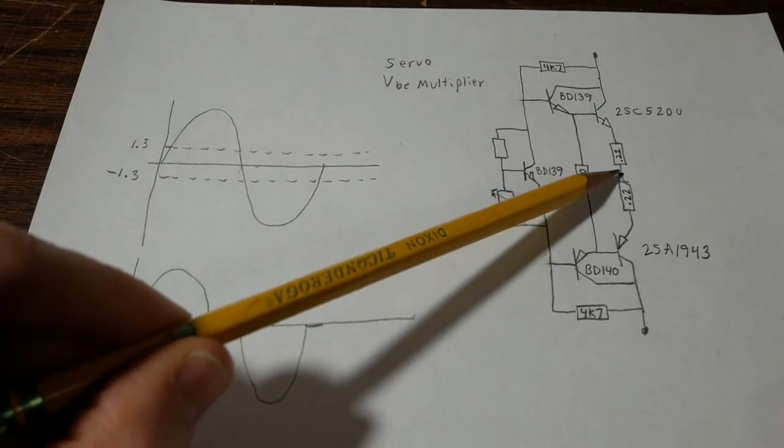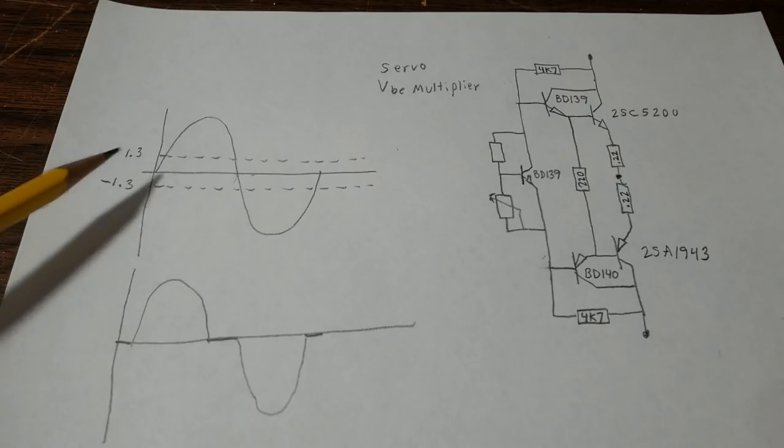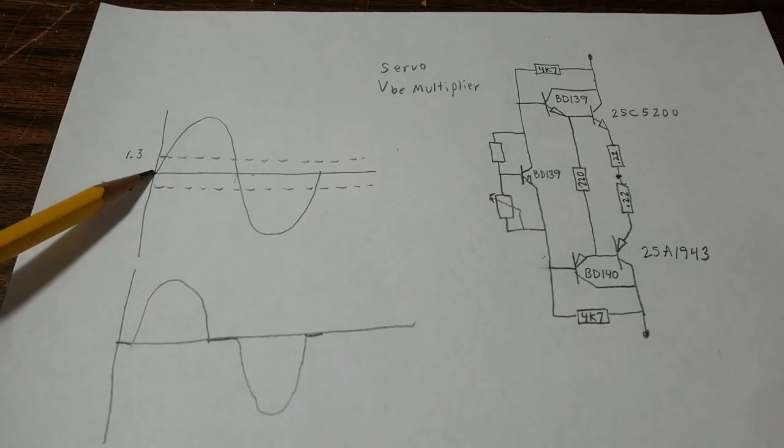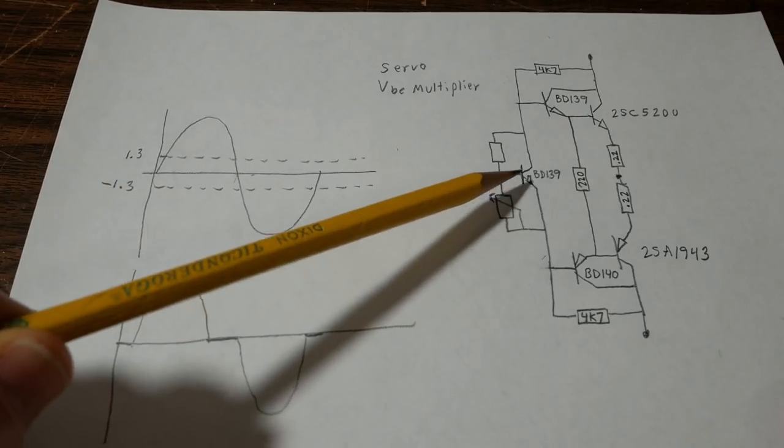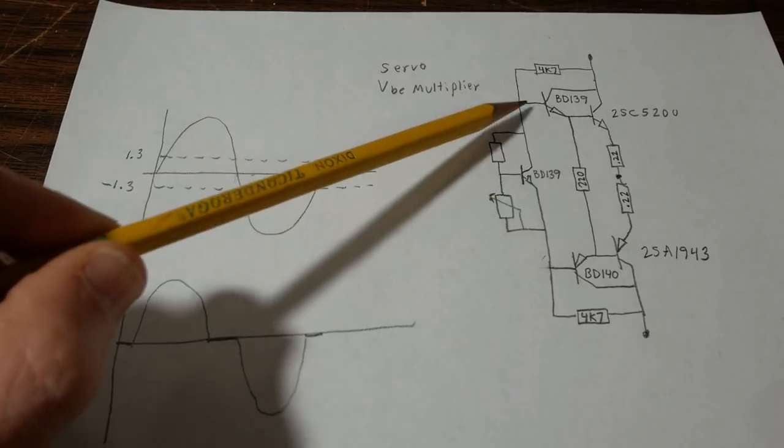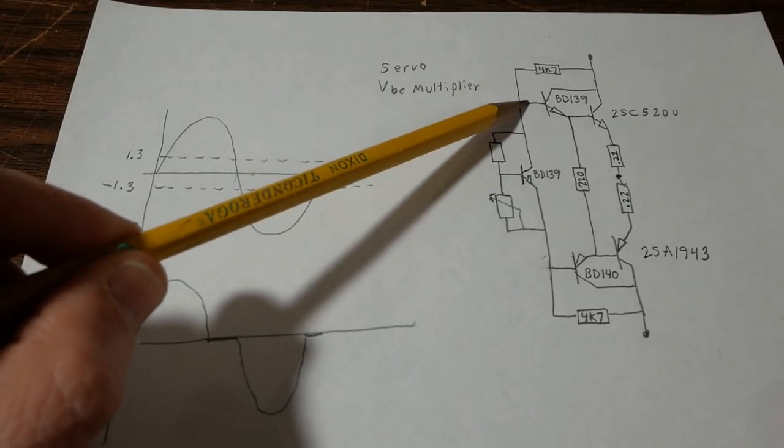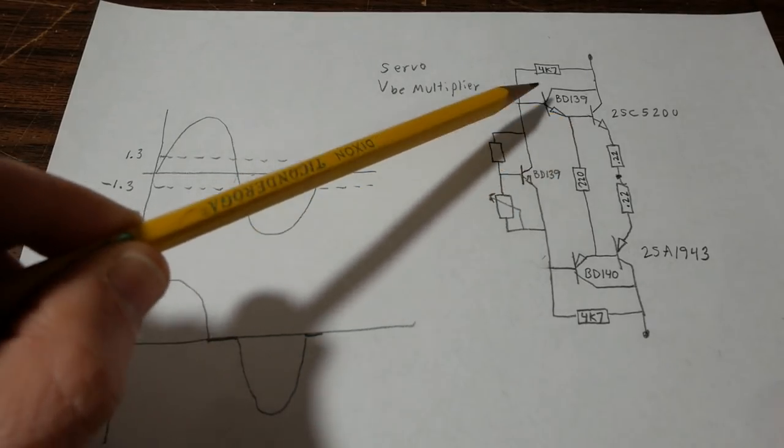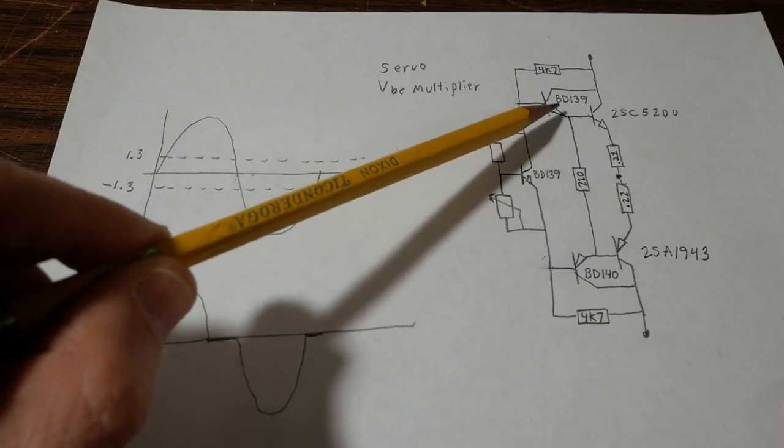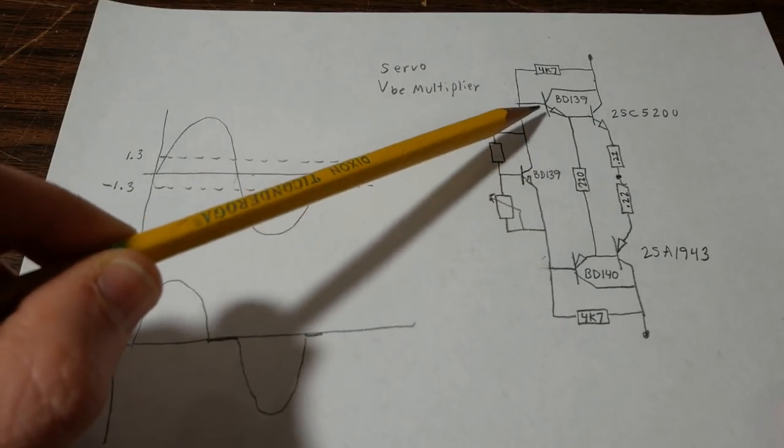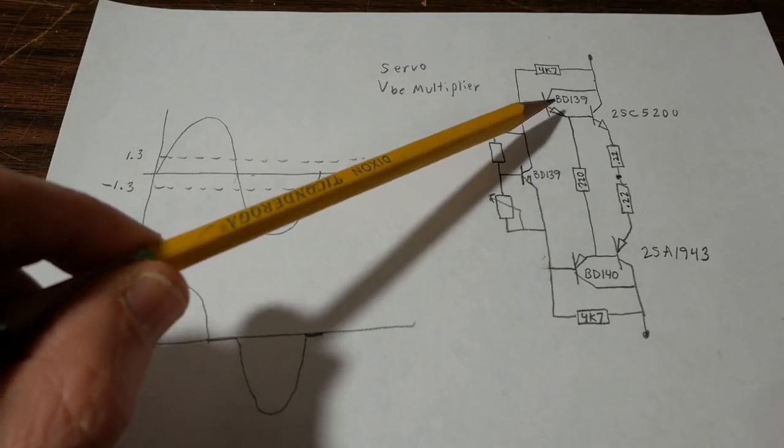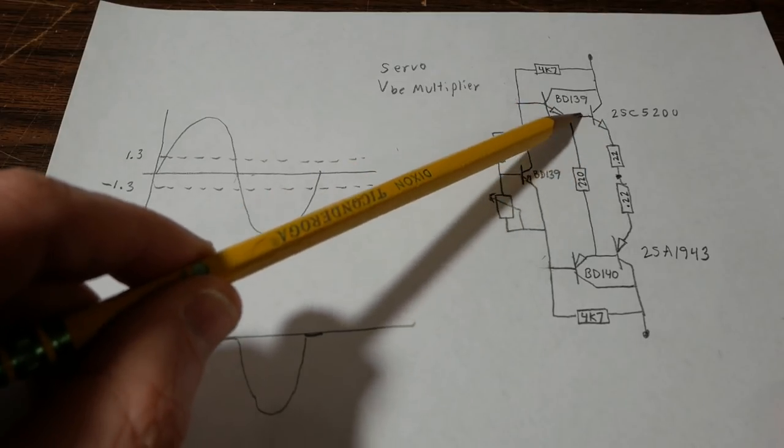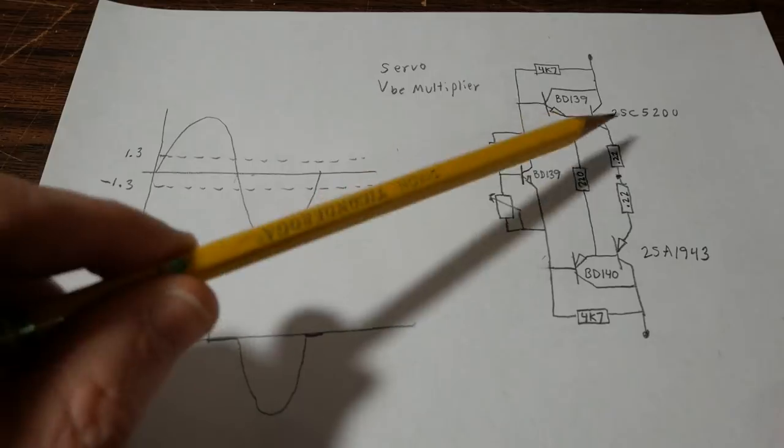So relative to this node here if the signal is at zero volts well no current can flow in the output because you have to remember that to get current to flow through these transistors you have to exceed the base to emitter voltage which is about 650 millivolts. And there's two transistors so it's about 1.3 volts.